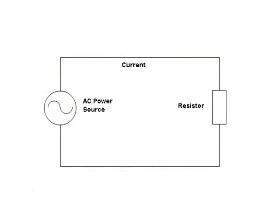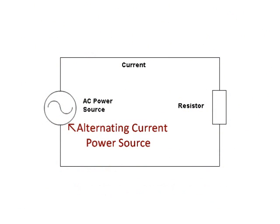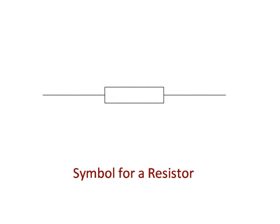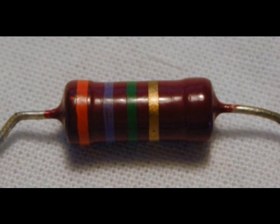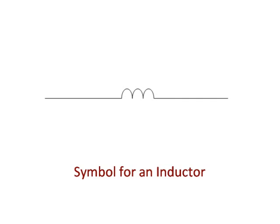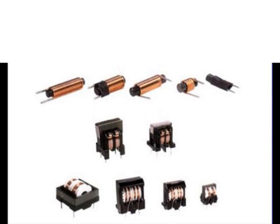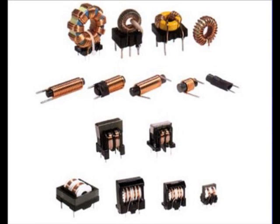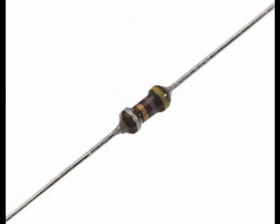We shall now apply our newly discovered knowledge of phasors to electric circuits supplied with alternating current, or AC. Let us begin by considering the three types of components commonly present in electrical circuits: resistors, inductors, and capacitors.